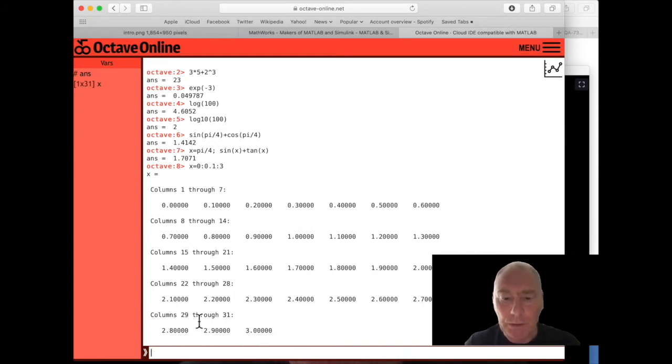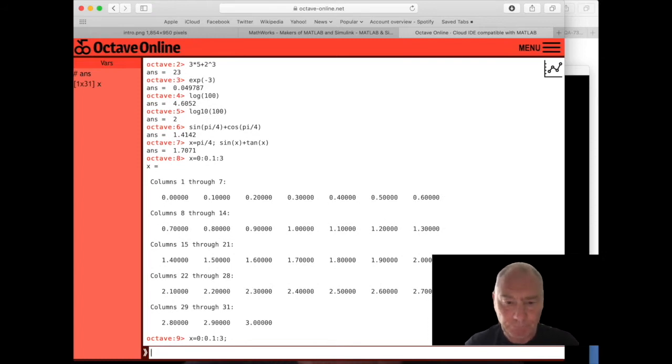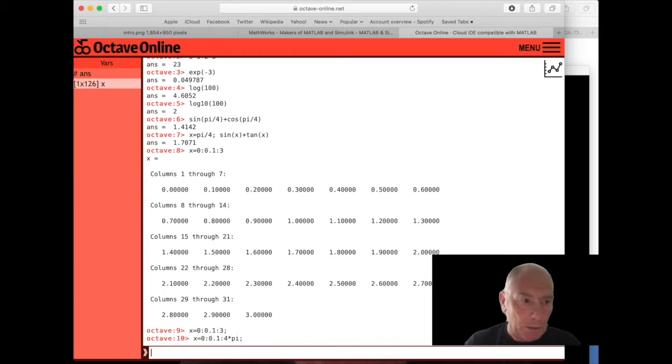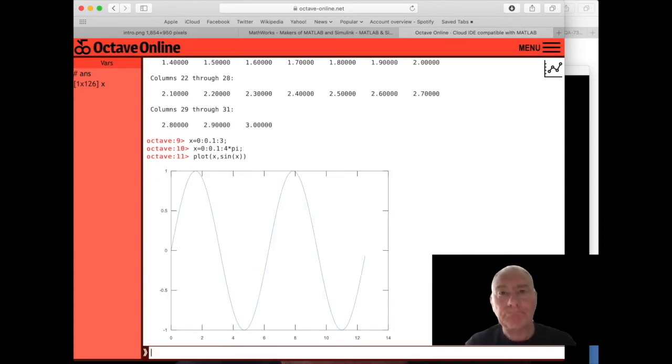Now when we do this kind of thing, the screen can get a bit messy. So if we use a semicolon at the end and hit return, we don't see the list of numbers. Why is this useful? Well one of the reasons it's useful, and there are many, is that we can plot graphs. Let's suppose we set up a list of numbers. x goes from 0 in steps of 0.1 to 4 pi. Again we put the semicolon so we don't see the output. Well now we can plot x against sine x. Great.